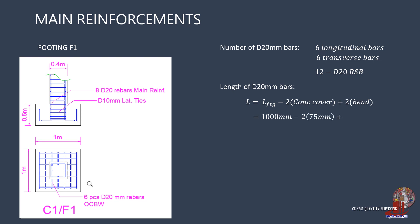So the length of the bar is 1000mm from the footing length, minus twice of 75mm clear concrete cover, then add twice of the bend length, which is 12 times 20mm. The length turns out as 1330mm.